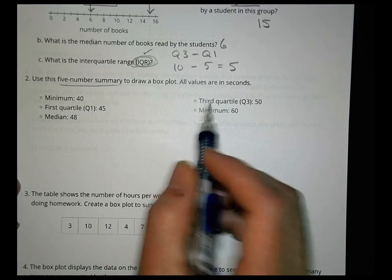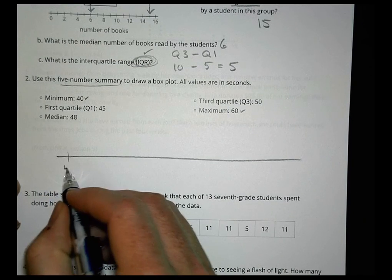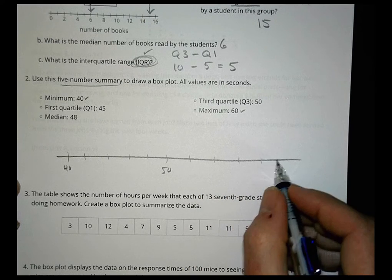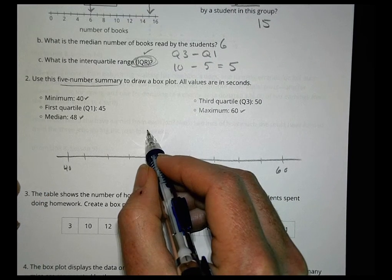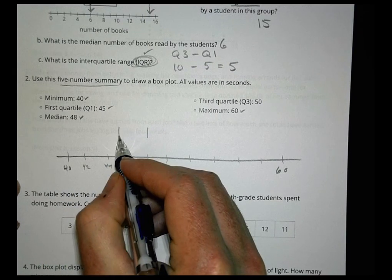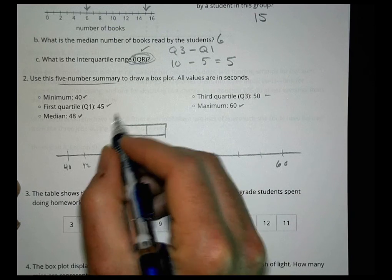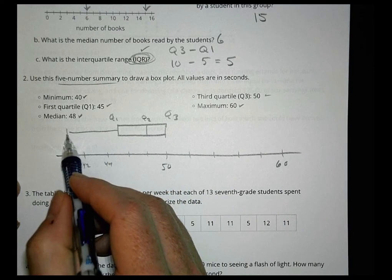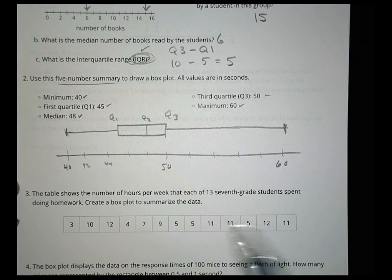Use this five number summary to draw a box plot. We have forty to sixty. That tells me how long this needs to be. So I'm going to put a forty right here and count by two. So forty two, four, six, eight, fifty, two, four, six, eight, sixty. My median, I'll start there, is at forty eight. My first quartile is forty five. Third quartile is at fifty. So my box is going to be from quartile one to quartile three. And there's the median right there. We know the minimum is at forty, so whisker to forty. And the maximum is out here at sixty. So whisker to sixty. And that's all there is to it.